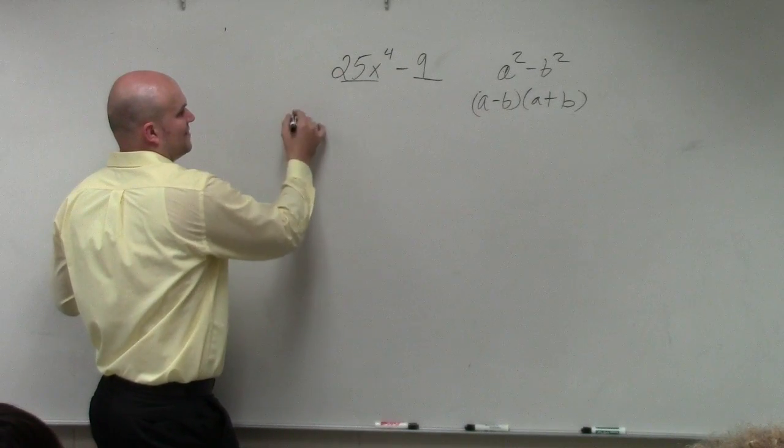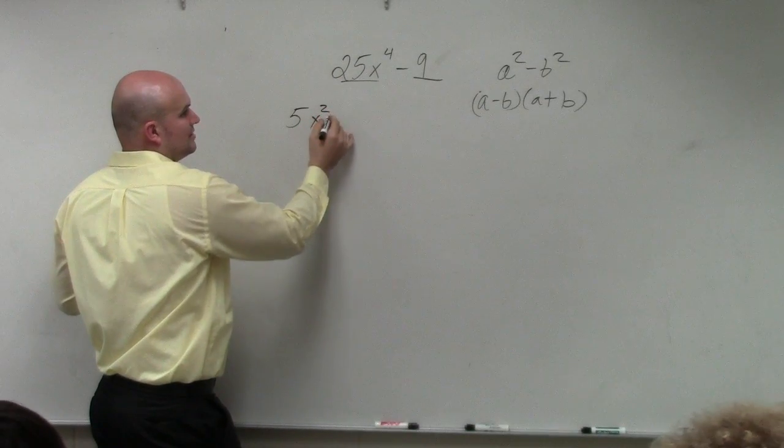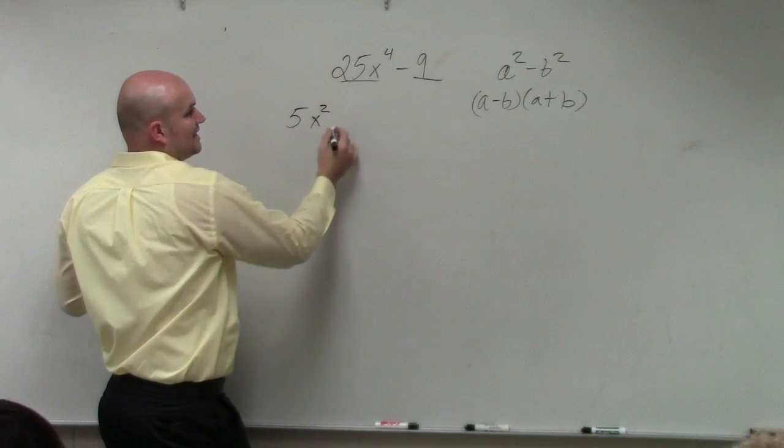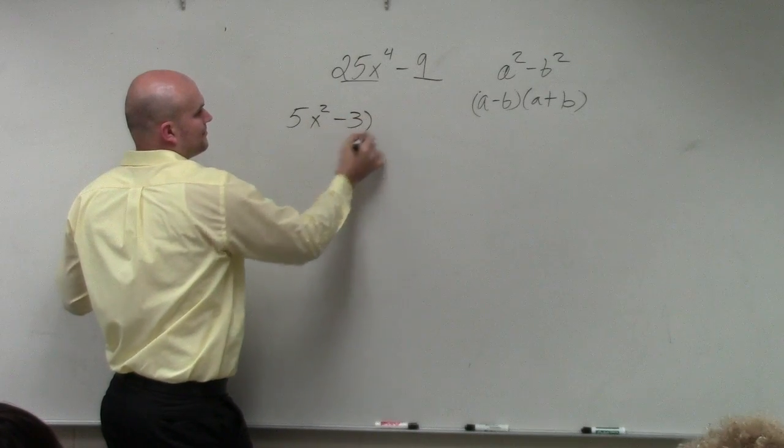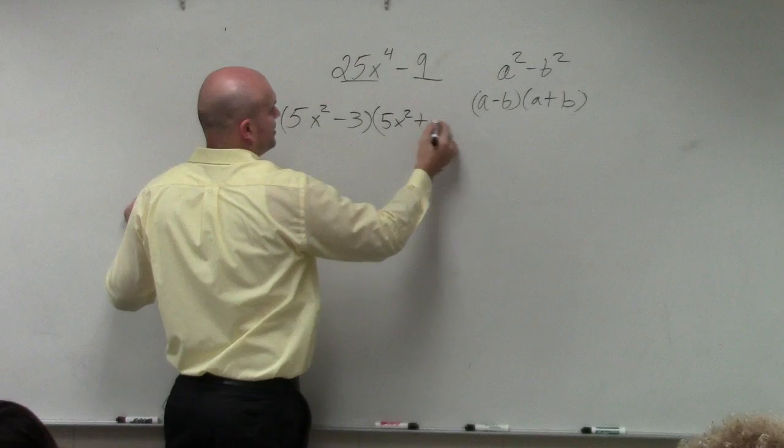So the square root of 25 is 5. The square root of x to the fourth is just x squared. And then square root of 9 is going to be 3. And then I have 5x squared plus 3.